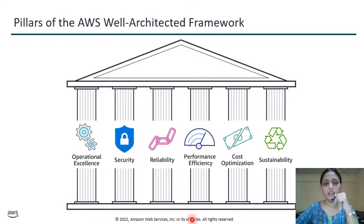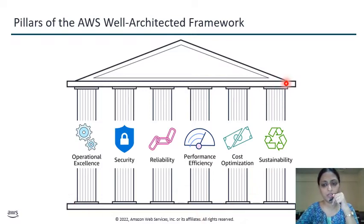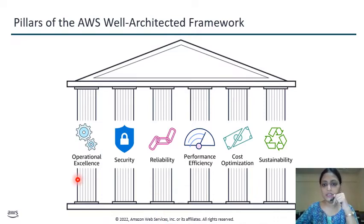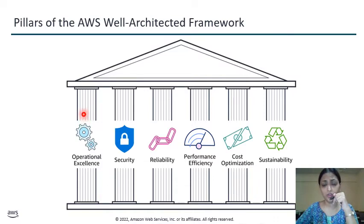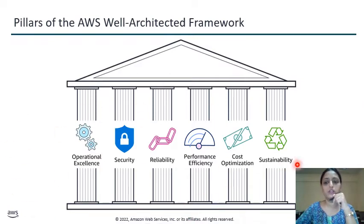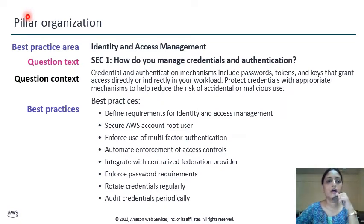The simple meaning is that if you want to develop any AWS architecture, the customers expect the following things. As a developer, you need to create an architecture that follows all the pillars. Now let's understand the pillar organization. We categorize all things into four parts: best practice area, context, question, and best practices for each question.